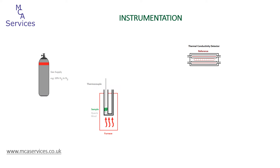We're now ready to introduce gas flow. Here at MCA Services for TPR, we use a blend of 10% hydrogen in nitrogen. The critical thing to consider when selecting gas mixtures is that they must have a reasonable difference in thermal conductivity — between the active component, the hydrogen, and the inert carrier. The thermal conductivity of hydrogen is about seven times higher than that of nitrogen, so there's a really good difference there, because we're going to be measuring what happens at the TCD when hydrogen is taken out of the flowing stream and consumed by the sample to reduce it.